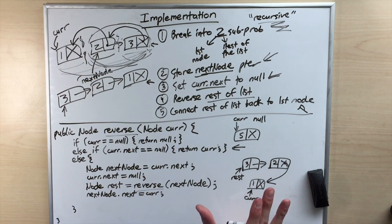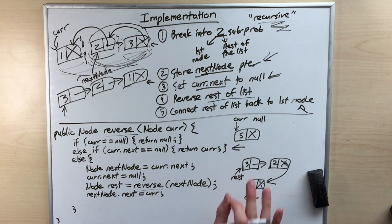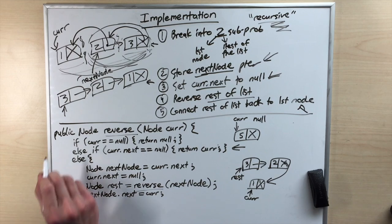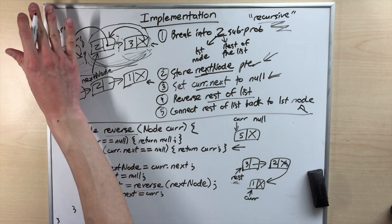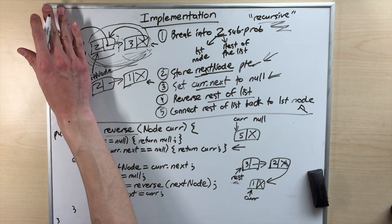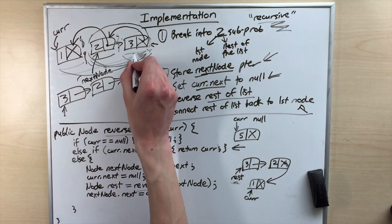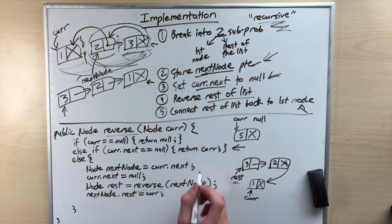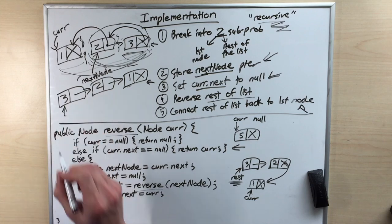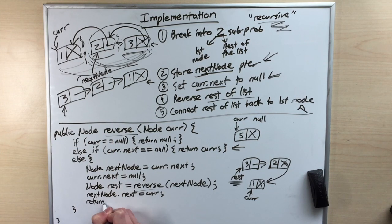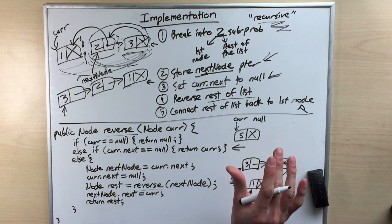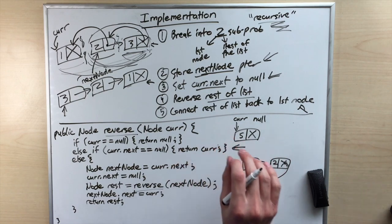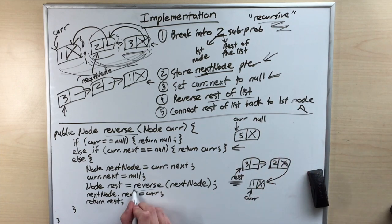Everything looks like it works fine. All we have to do now is return the correct reference. We want to return a reference to the first node in our reverse linked list. The interesting part is that rest will always point to the first node in the smaller reverse linked list, and that first node will always be the same even in the larger reversed list. So all we have to do is return rest. And that is a recursive implementation — it's weird, but it's okay. In the next section we'll dive into a more specific, slightly more complicated example.